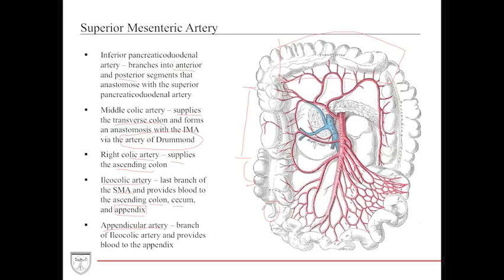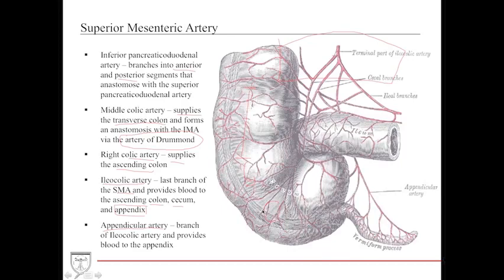The appendix has a small branch often tested called the appendicular artery, which is a branch off the ileocolic and provides blood to the appendix. It is important when appendectomies are performed to find, isolate, and sometimes ligate this vessel. In a blown-up image, the terminal part of the ileocolic vessel provides blood posterior to the ileum and carries down into what becomes the appendicular artery.